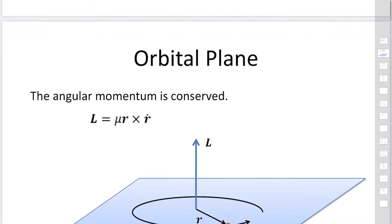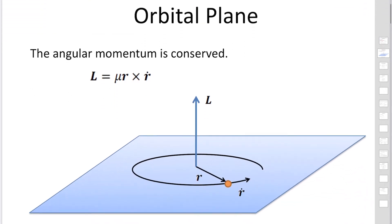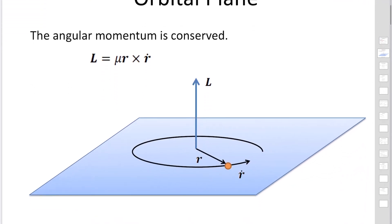Since angular momentum L is a conserved quantity and doesn't change, the particle must move on a plane. L remains constant throughout the motion.